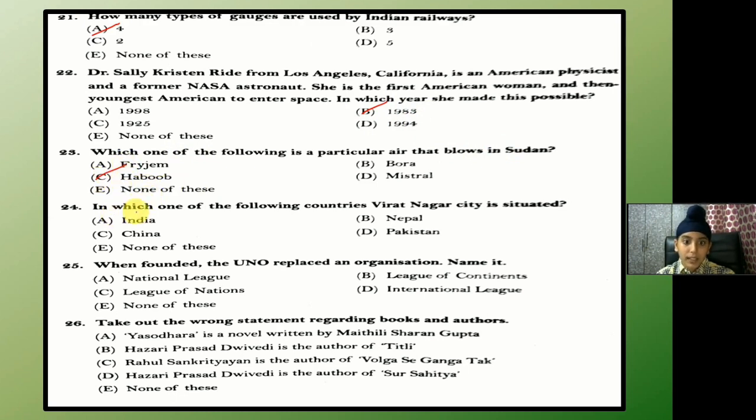In which one of the following countries is Virat Nagar city situated? The answer is B — Nepal.